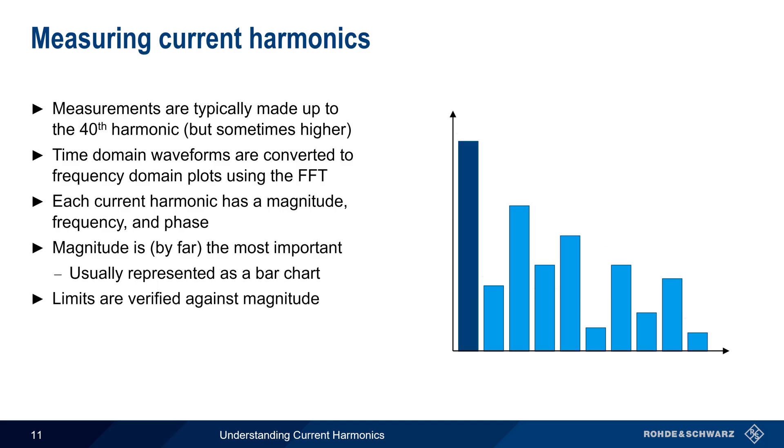Limit testing of current harmonics is also done on a per-harmonic basis, with each harmonic having its own magnitude limit. Since a bar chart only shows the magnitude, numeric tables are used to display the frequency and phase information in addition to magnitude. Before we move on, please take a moment to notice that, in this example, the odd-order harmonics have a greater magnitude than the adjacent even-order harmonics.